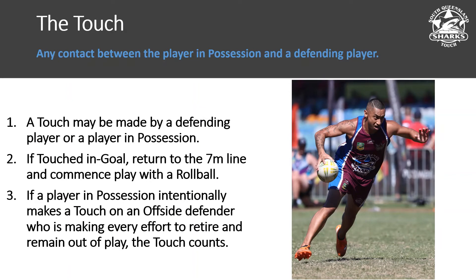The touch is any contact between the player in possession and the defending player. A touch may be made by a defending player or the player in possession. If touched in goal, they return out to the seven metres and commence with a roll ball. If a player in possession intentionally makes a touch on an offside defender who is making every effort to retire, the touch counts — for example, if the half scoots through and puts an arm out to push the defender away. That rule is about intentionally making a touch, not brushing past while trying to get through.